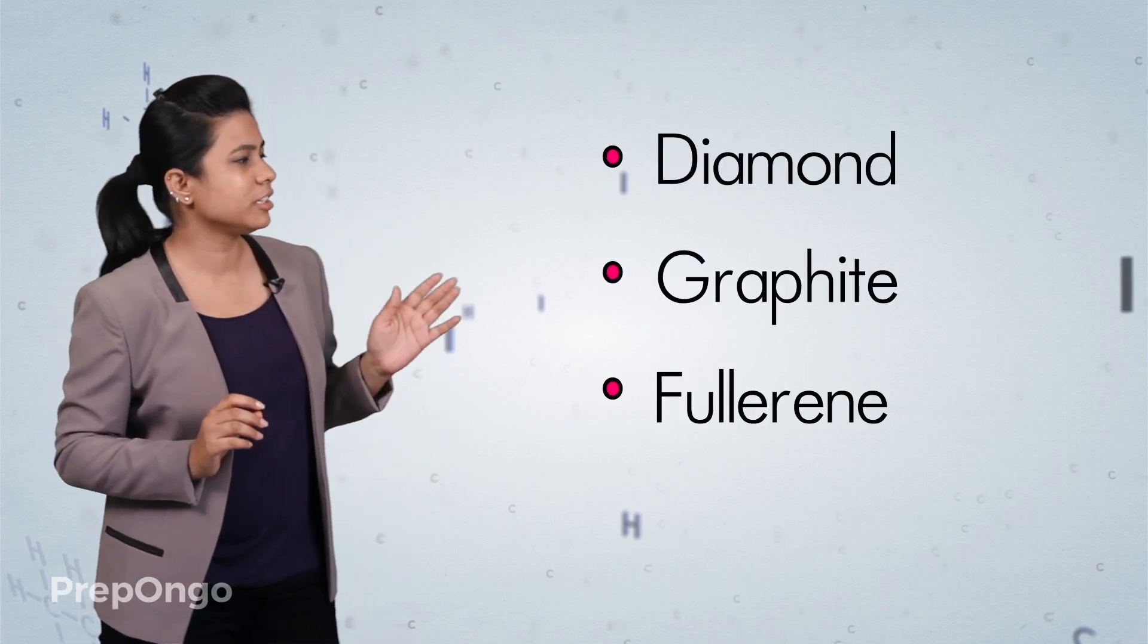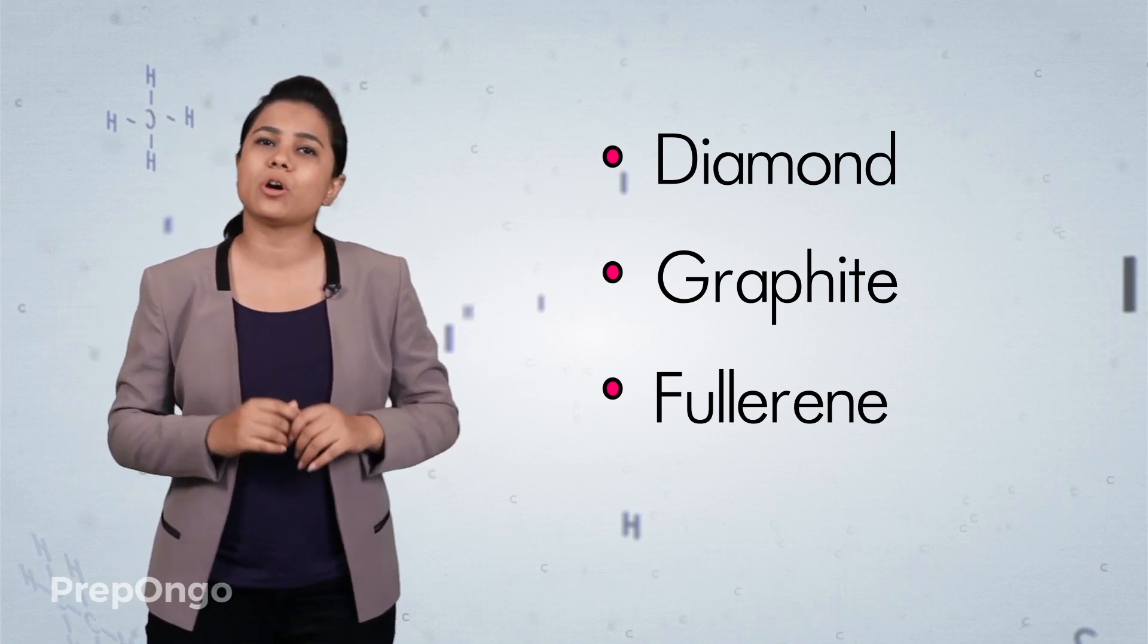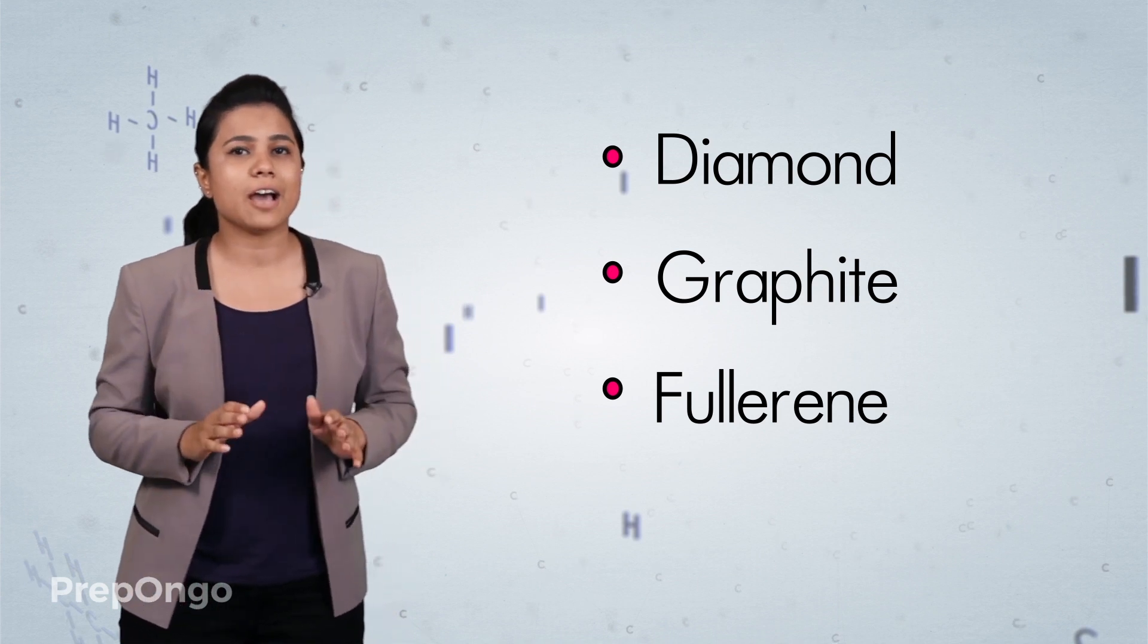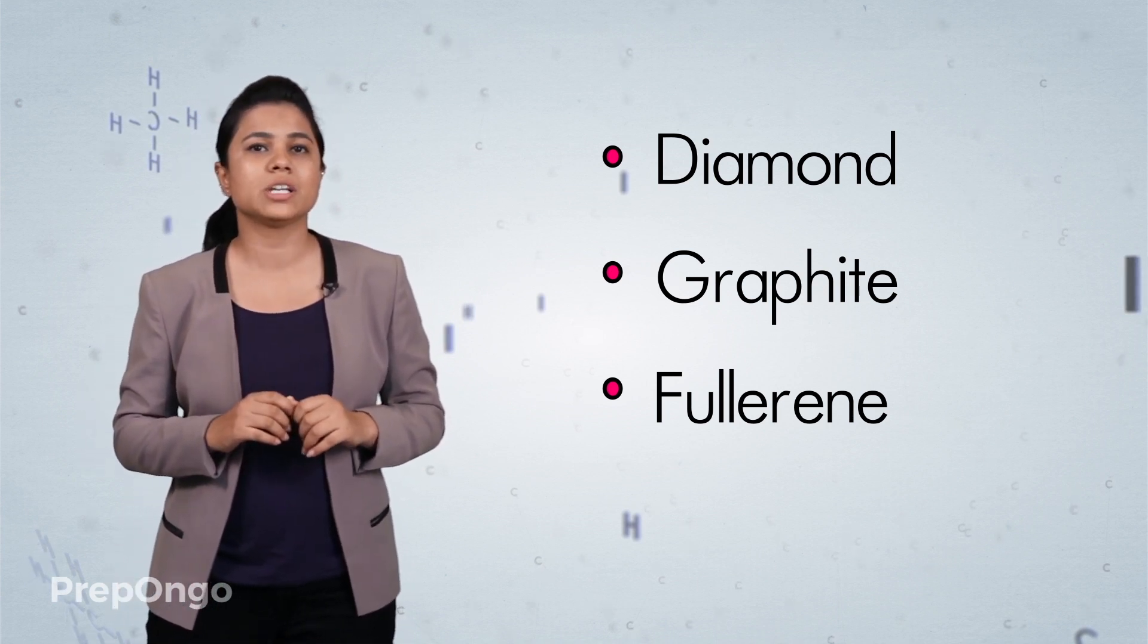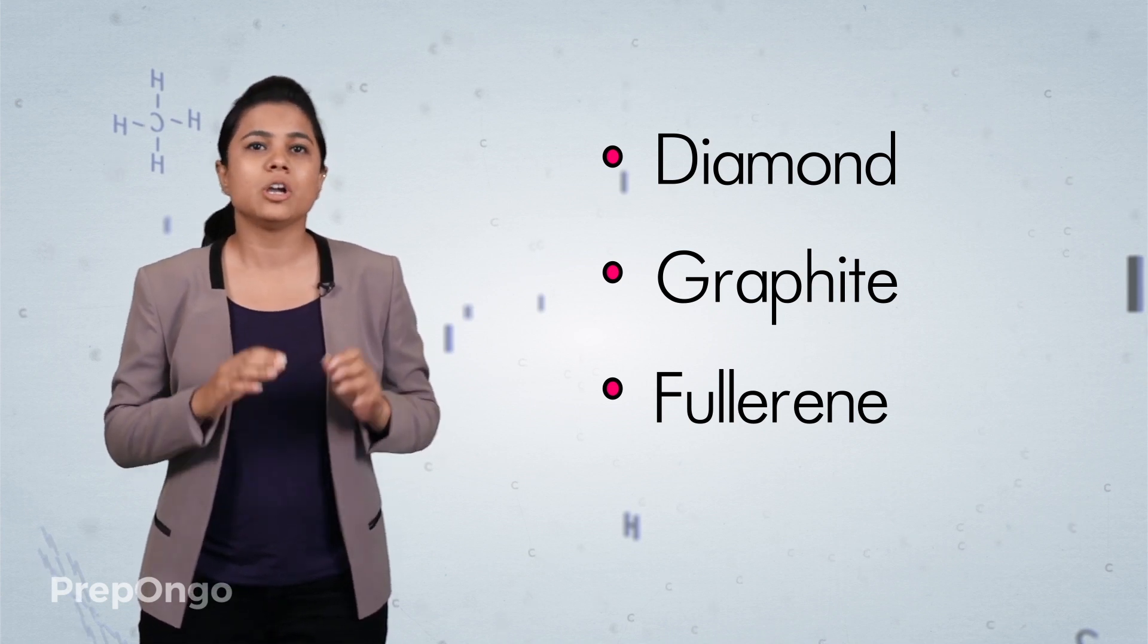Now carbon has three allotropes in the crystalline form. These are diamond, graphite and fullerene. All these allotropes are the purest form of carbon. They have similar chemical properties but the difference lies in the manner of the structure of bonding of carbon with one another.